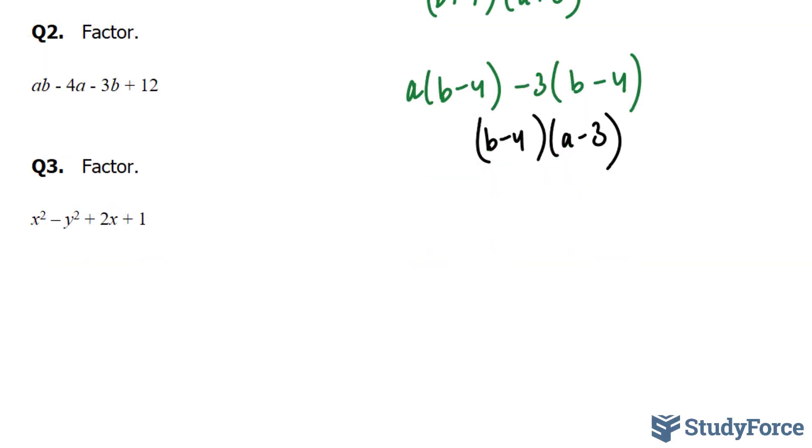In question three, we're asked to factor x squared minus y squared plus 2x plus 1. And you'll notice that this time, they haven't been grouped together for us.